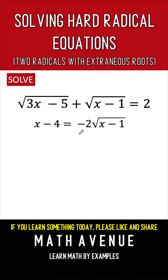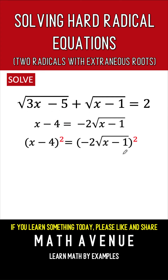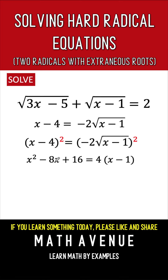We now have a simpler equation but it still contains a radical, so we apply the same procedure again. We raise both sides to the power of 2 to eliminate the radical on the right side. The left side gives us a square of a binomial: x squared minus 8x plus 16. On the right side, we square each factor — the square of negative 2 is positive 4, and the square of the square root of x minus 1 is x minus 1, since the square root and exponent two cancel out.